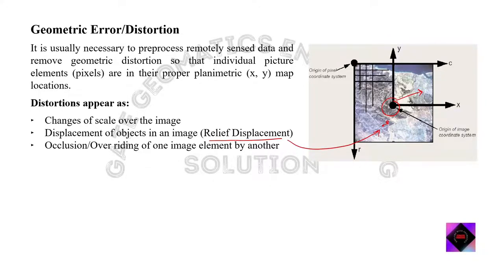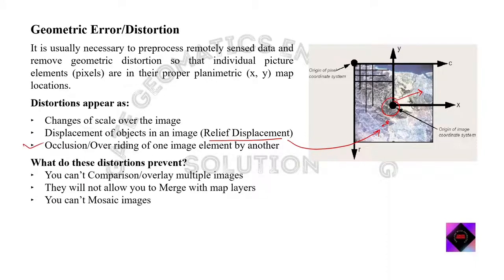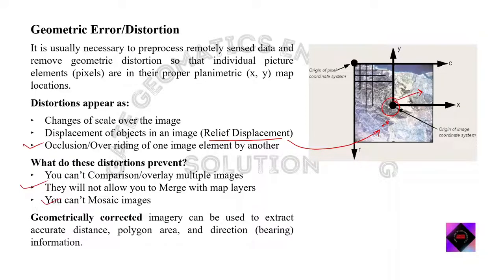Images of ground positions are shifted or displaced due to terrain relief. The third point is occlusion, or the overriding of one image element by another. Now, what does this distortion prevent? If there is any geometric distortion present in an image, we can't do comparison or overlay of multiple images, we can't merge with map layers, and we can't do mosaicing. Geometrically corrected imagery can be used to extract accurate distance, polygon area, and direction information, so it is very important to geometrically correct the image before further processing.